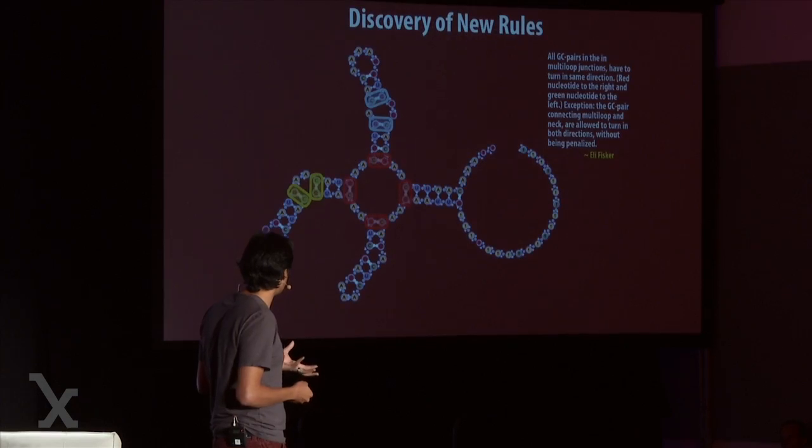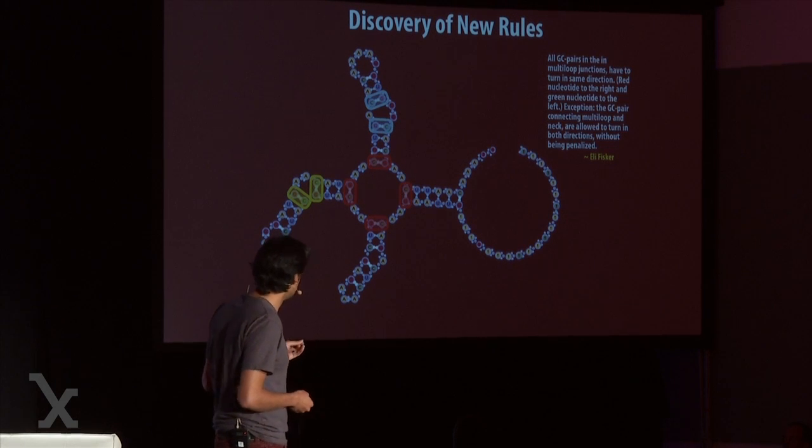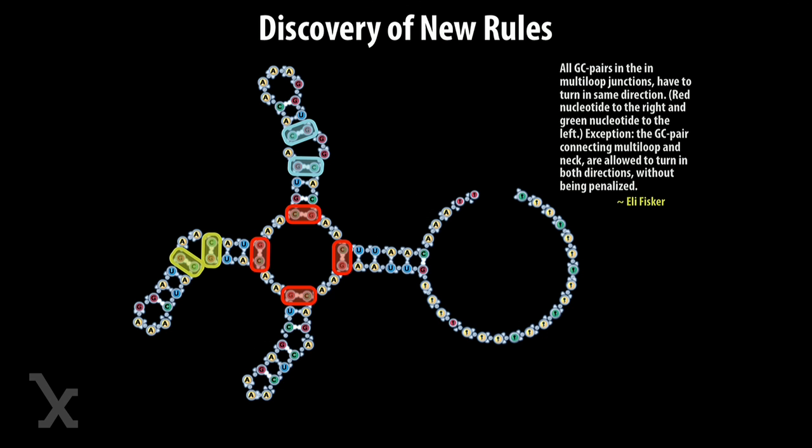How is this happening? If you read the forums and the chat, the players themselves are proposing rules — new patterns in the data that we'd never thought of before. One of our top players, Eli Fisker, noticed that successful designs have CG pairs — red-green pairs — that bracket each of the loopy circles, and those red-green pairs turn clockwise in a particular direction when drawn in the Eterna schematic. There's no concept of the 'turning' of CG pairs anywhere in the RNA-folding literature. I didn't understand what he was talking about for a long time, but it turns out this is explanatory of good designs, and indeed Eli Fisker is our top player.